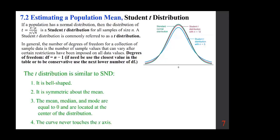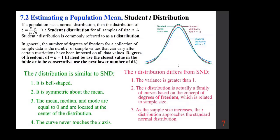The t-distribution is similar to the standard normal: it is bell-shaped and symmetric about the mean. The mean, median, and mode are all equal to zero. The curve never touches the x-axis. The variance is greater than one. As the sample size increases, the t-distribution approaches the standard normal distribution — ultimately, t becomes z for large n.